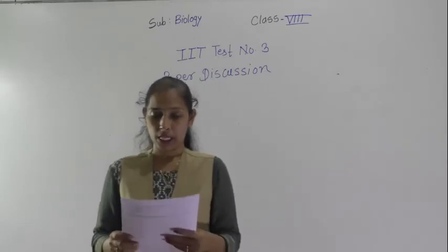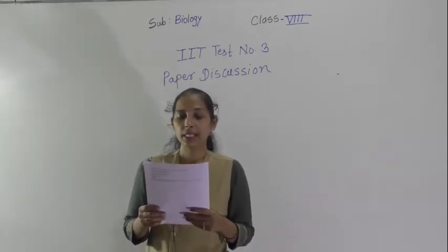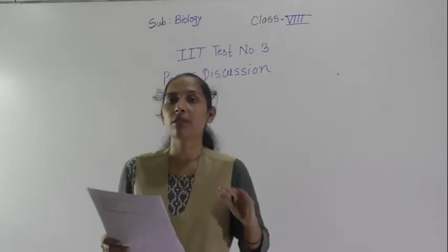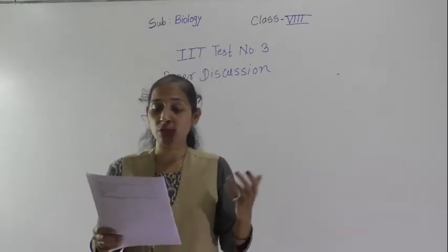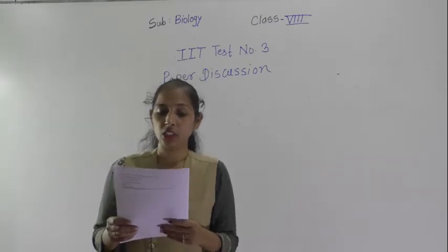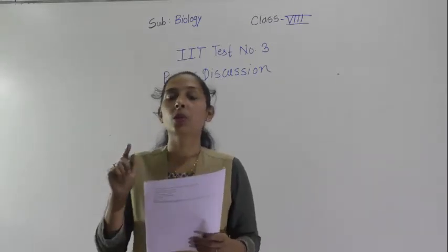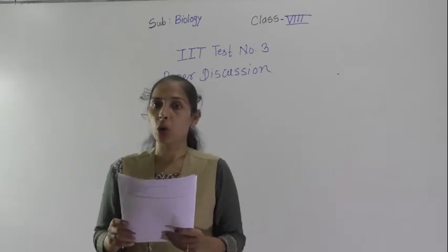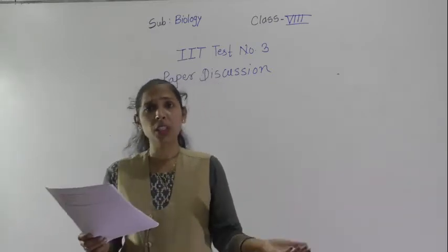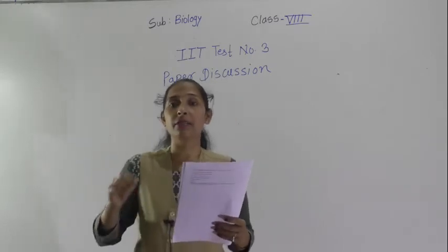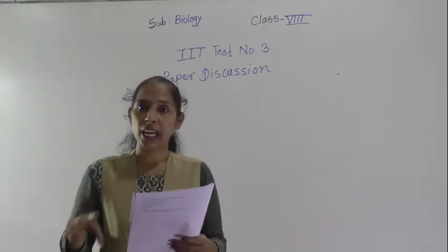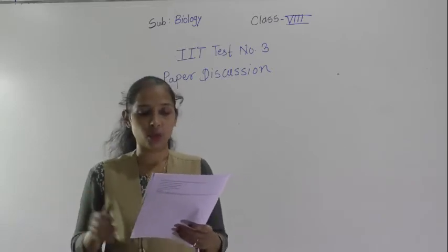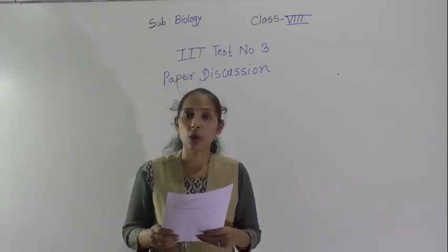First question: cells present in living organisms are diverse in which categories? They are diverse in shape, size, or number. The correct option is option D, that is all of these. In our lesson we discussed that cells are different in their shape, size, and number according to their functions. So the correct option is D, all of these.